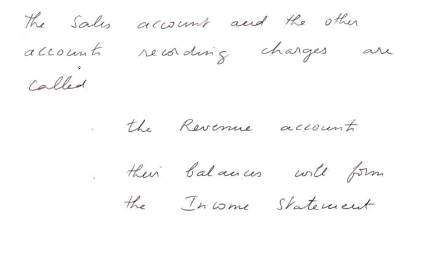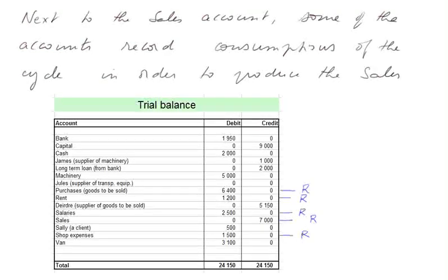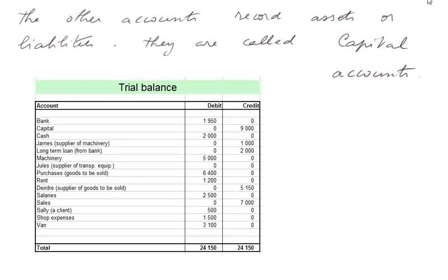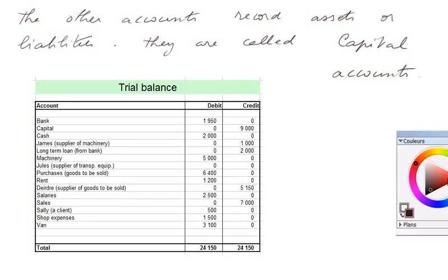So these are the accounts that will go into the income statement. The sales account and the other accounts recording charges are called the revenue accounts — that is why I wrote an R next to them. Their balances will form the income statement, but there will be some work before we have a correct income statement. The other accounts record assets or liabilities and are called capital accounts. Let's check them off again. The bank is a capital account — it's an asset, money we have at the bank.